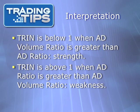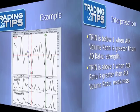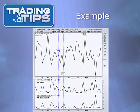TRIN is less than 1 when the AD volume ratio is greater than the AD ratio, and this is viewed bullishly. When TRIN is greater than 1, it means the AD ratio is greater than the AD volume ratio, signaling weakness. Here is an example of the NYSE Arms Index — notice the red line at the 1.0 mark.